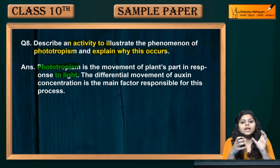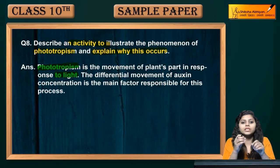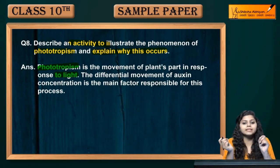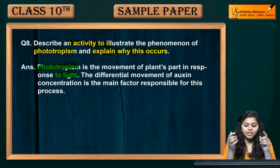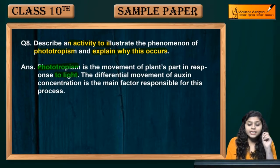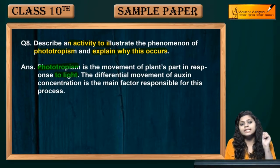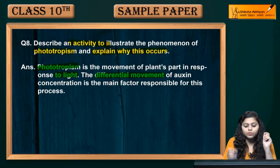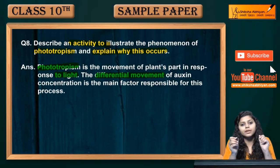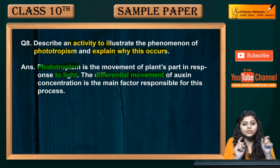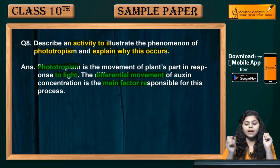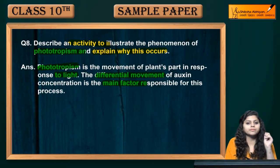For example, if you look at the leaves or the shoot, the side facing the light will bend. This is phototropism. Why does this happen? It is due to the differential movement of auxin concentration, which is the main factor responsible for phototropism.